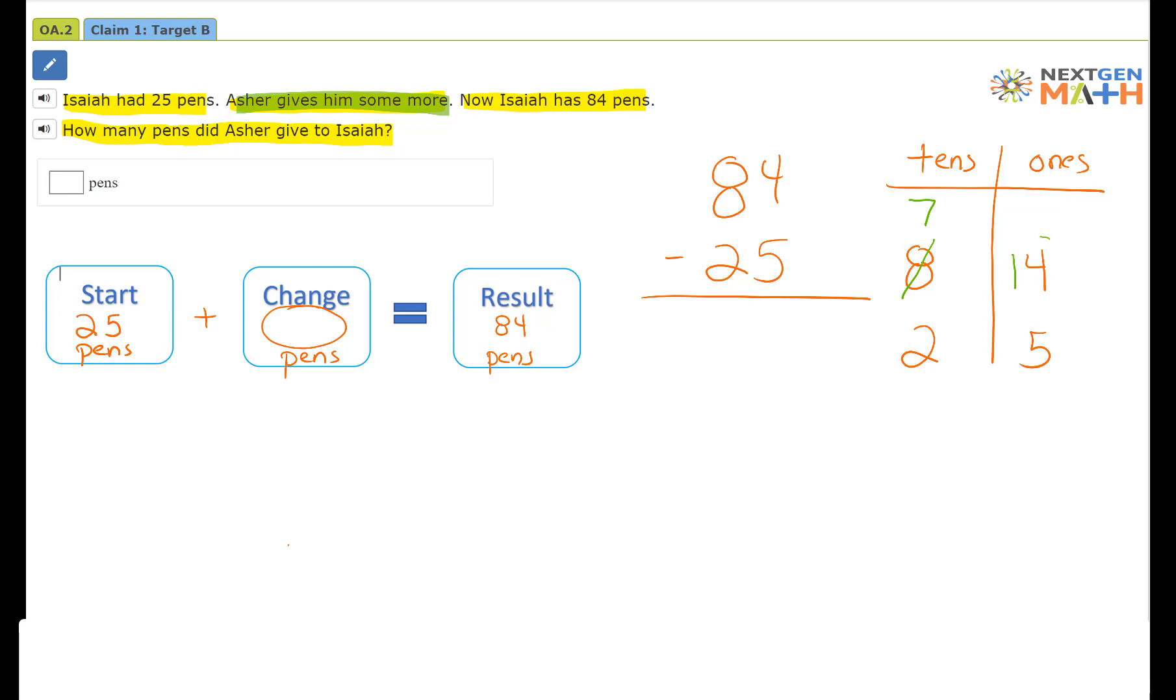So now we can subtract 14 minus five. 14 minus five is nine. And then we do seven minus two. Seven minus two is equal to five.